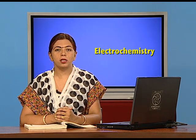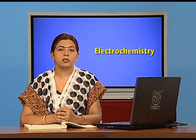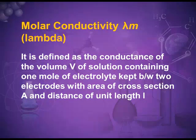The next topic of this unit is molar conductance. If we take one mole of the electrolyte, then the ions produced by this one mole of electrolyte offer conductance. This conductance is molar conductance. It is defined as the conductance of the volume V of the solution containing one mole of the electrolyte, kept between two electrodes with area of cross section A and distance of unit length L.